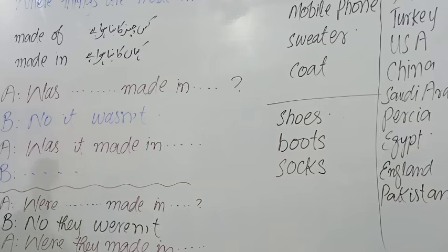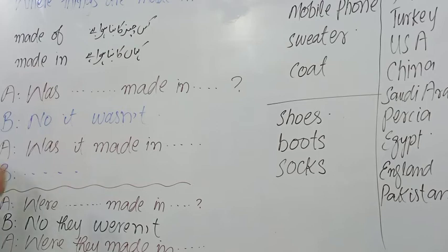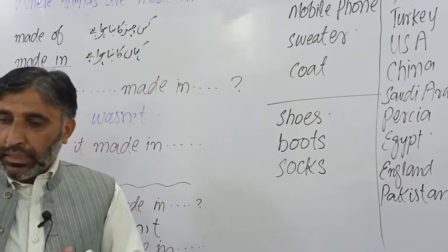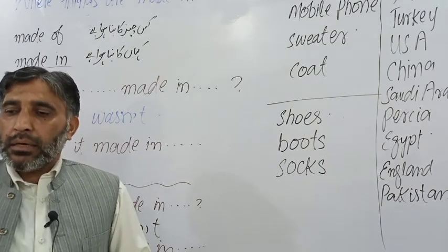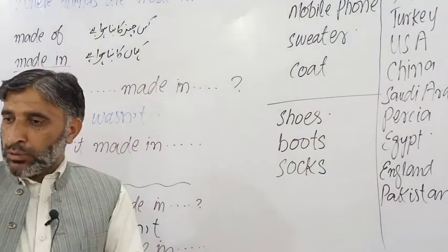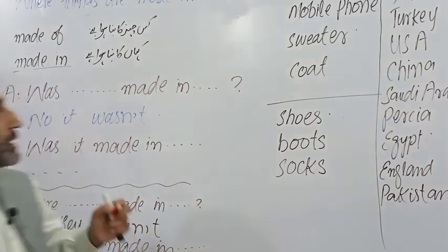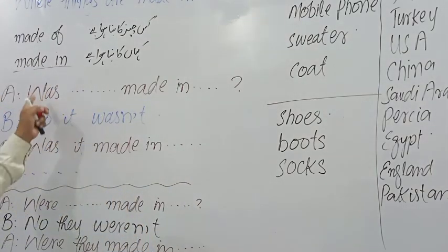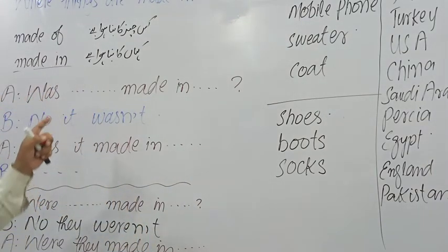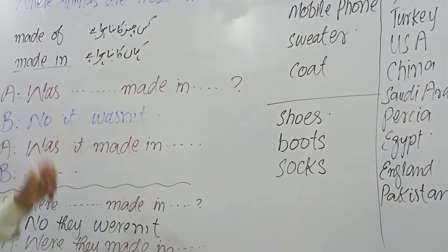Agar haem yeh pooch lein ge, lekin jab haem made in ke baare mein baat karte hain, toh jis bhi chiz ke baare mein haem baat karte hain, woh pahle hi bana hua hai. Ab haem haara haalat mein — haema haara past mein hai. Bana toh maazi hua hai. Toh jab haem maazi ki baat karte hain, toh is or am na use karenge — haem was use karenge.